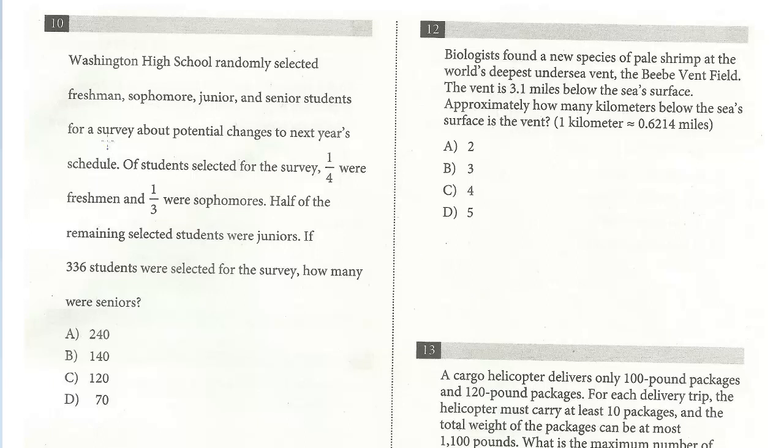Let's take a look at question 10. Washington High School randomly selected freshmen, sophomore, junior, and senior students for a survey about potential changes to next year's schedule. Of students selected for the survey, one quarter were freshmen and one-third were sophomores. Half of the remaining selected students were juniors. If 336 were selected for the survey, how many were seniors?